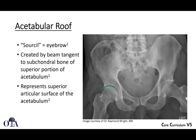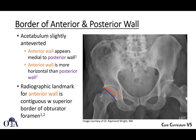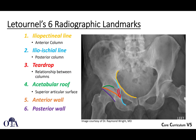The acetabular roof, also known as the sourcil — a French word for eyebrow — is created by a beam tangent to the subchondral bone of the superior weight-bearing portion of the acetabulum. It represents the superior articular surface, which is prognostically very important to restore. The acetabulum is slightly anteverted, so the anterior wall in orange appears a little more medial than the posterior wall shown in purple. The anterior wall is also slightly more horizontal. Its radiographic landmark is contiguous with the superior border of the obturator foramen.